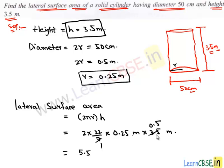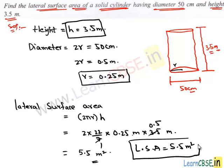And here we have meter into meter which is meter square. Therefore, lateral surface area of this cylinder is 5.5 meters square. And this completes our solution.